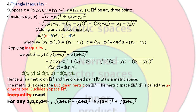Applying the inequality, d(x,y) is less than or equal to the square root of (a squared plus c squared) plus the square root of (b squared plus d squared). Substituting back the values of a, b, c, d, we get the square root of (x1 minus z1) squared plus (x2 minus z2) squared, plus the square root of (z1 minus y1) squared plus (z2 minus y2) squared, which equals d(x,z) plus d(z,y). Hence d(x,y) is less than or equal to d(x,z) plus d(z,y), and we have verified all properties. Therefore d is a metric on R2, called the Euclidean metric, and the pair is called the two-dimensional Euclidean space.